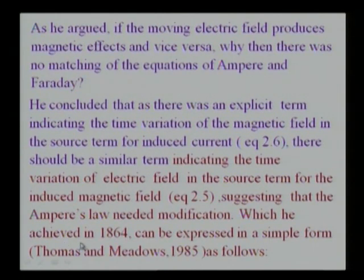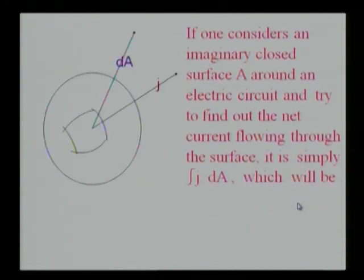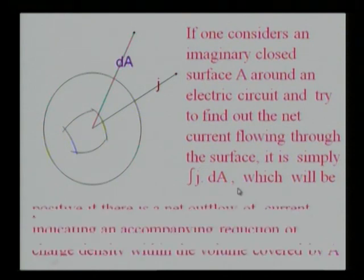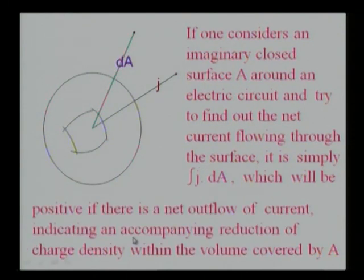He achieved this in 1864, and it can be expressed in a simple form. If one considers an imaginary closed surface A around an electric circuit and tries to find out the net current flowing through the surface, it is simply integral J dot dA, which will be positive if there is a net outflow of current, indicating an accompanying reduction of charge density within the volume covered by A.